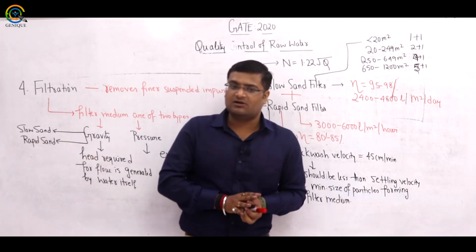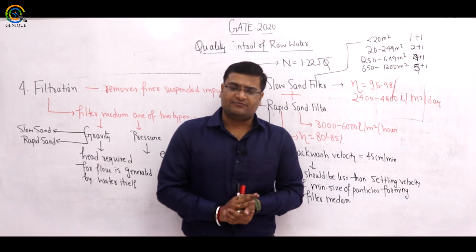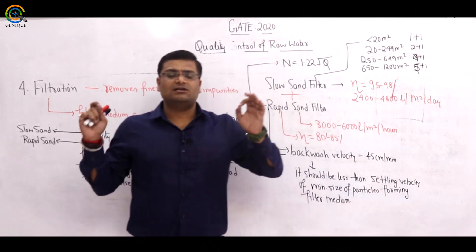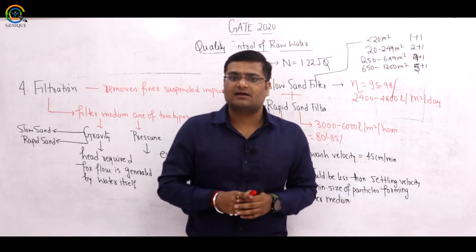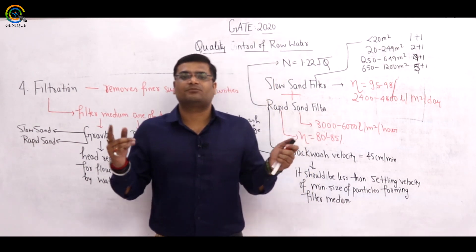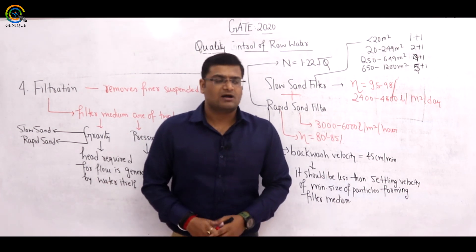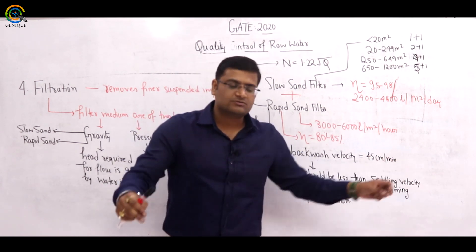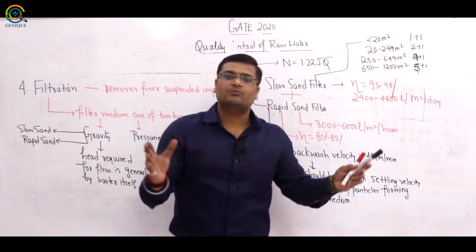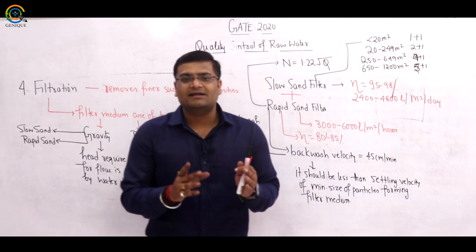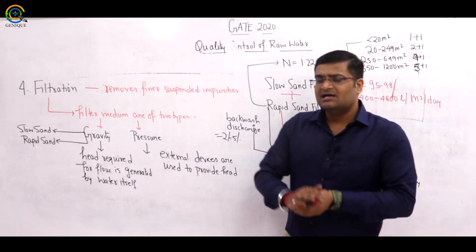Pressure filter concept is almost similar to rapid sand filter. Rate is also the same: 3000–6000 liters per meter square per hour. The difference is that external forces and machines are used to generate pressure for the filtration process. The best example of a pressure filter is swimming pool cleaning — nozzles at the bottom generate pressure, causing bubble formation, which cleans the entire pool.